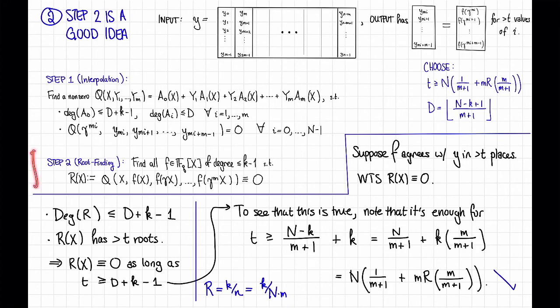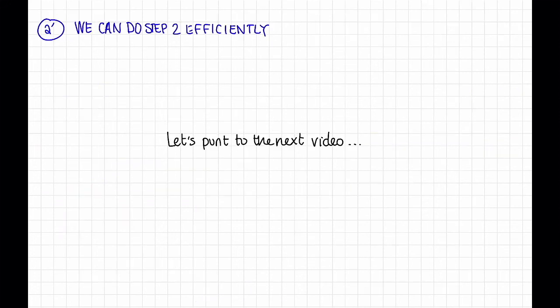So this establishes that step 2 is a good idea. That is, if F agrees with Y in strictly greater than T places, R(x) is going to be identically equal to 0, and we're going to return this F as part of our list. The next question we need to answer is, can we do step 2 efficiently? The answer turns out to be yes, but we will come back to this in the next video.